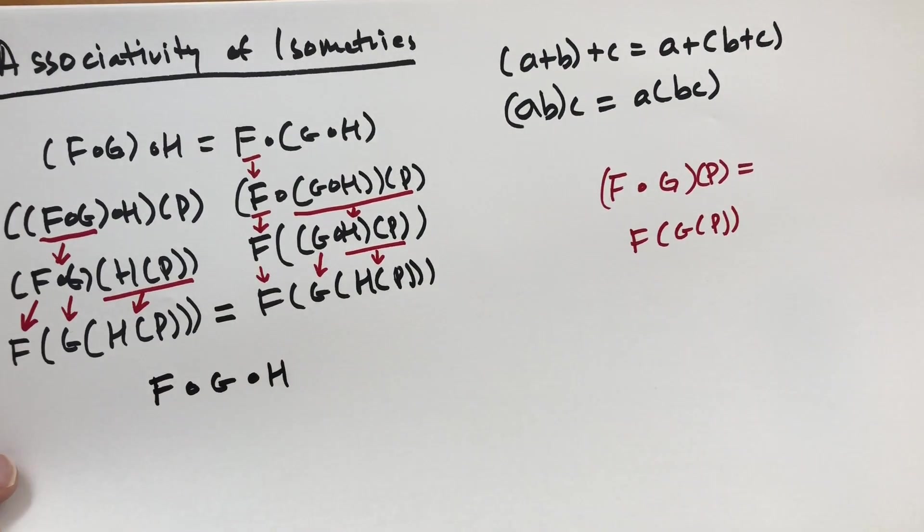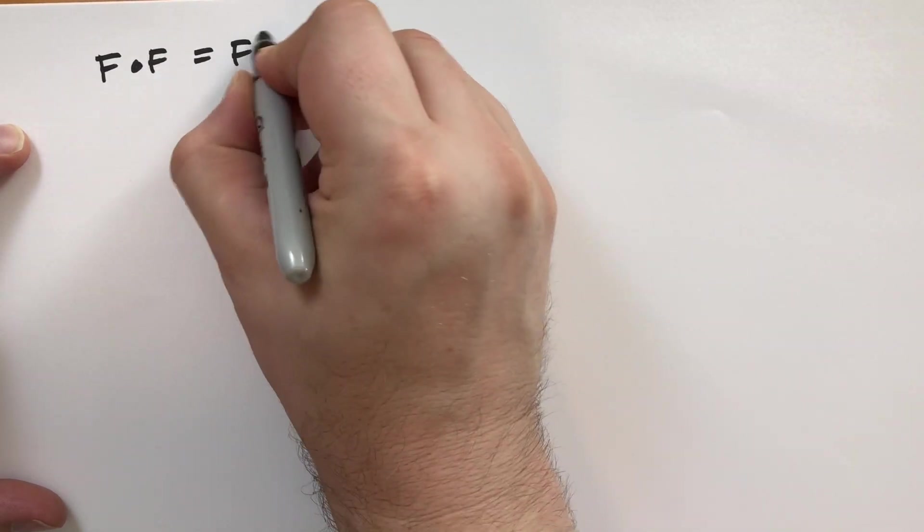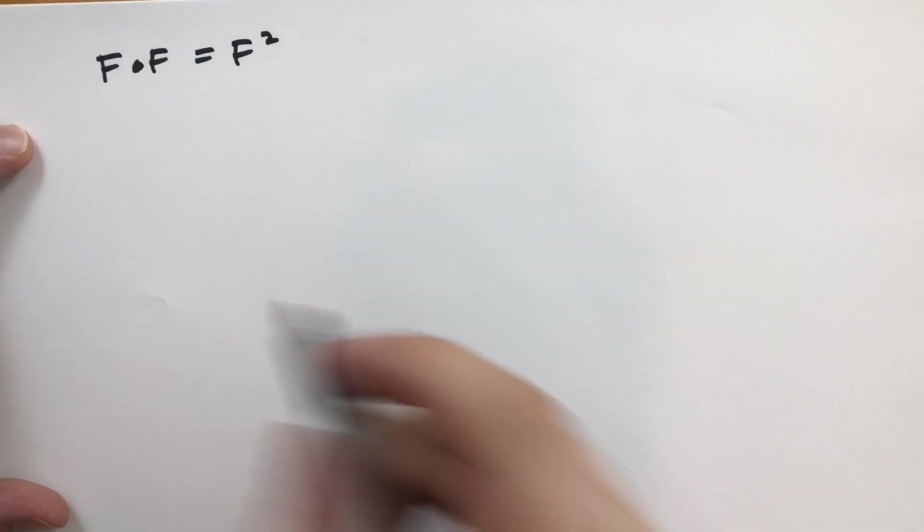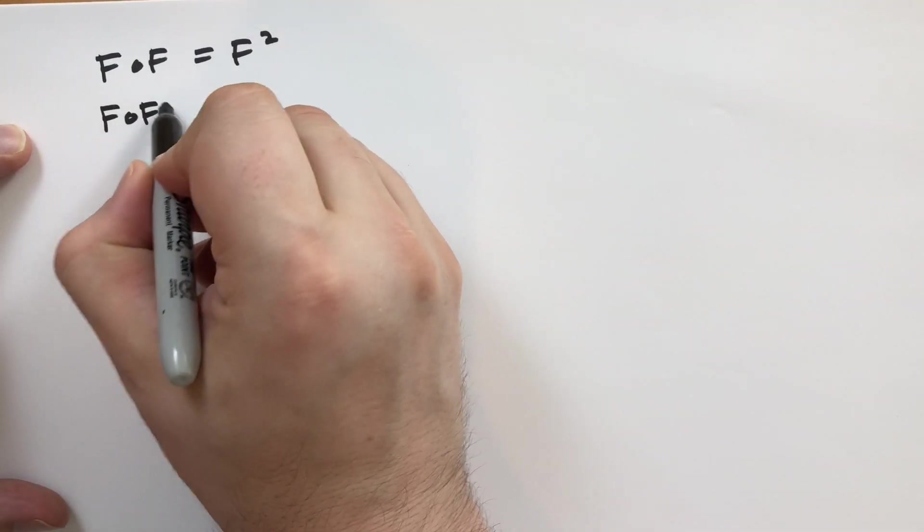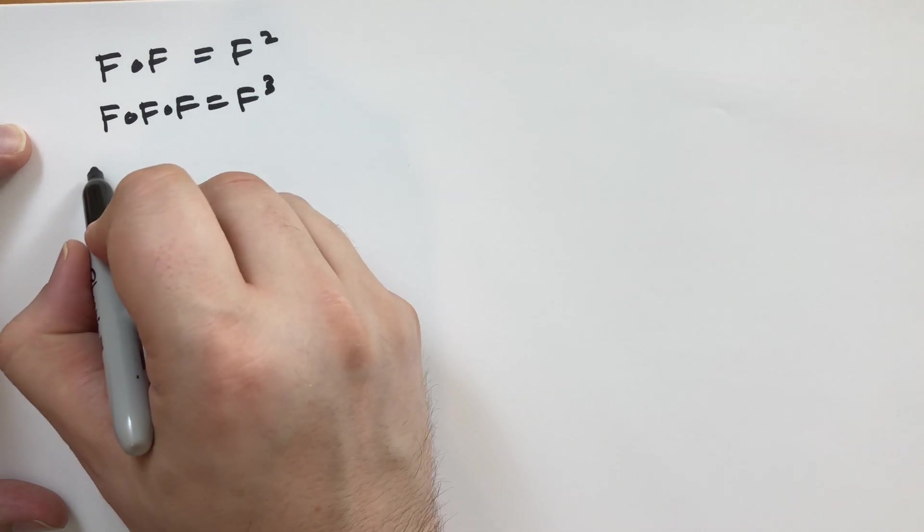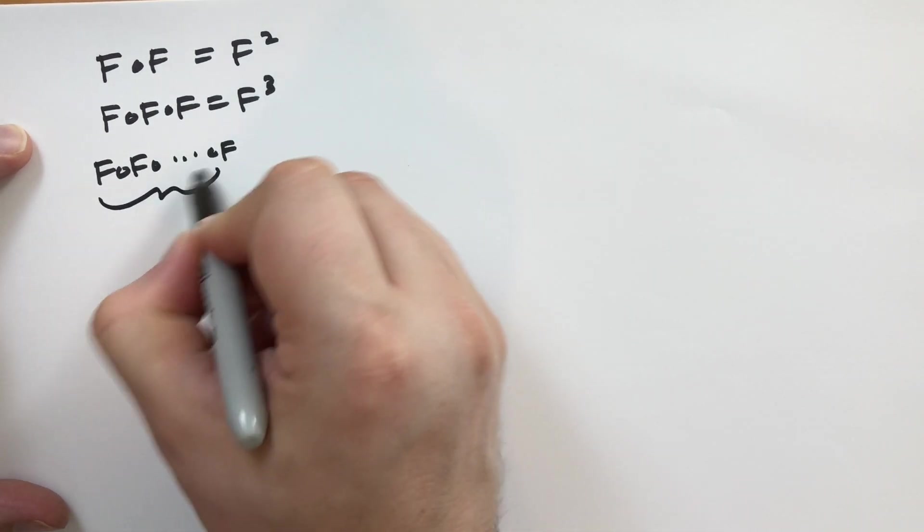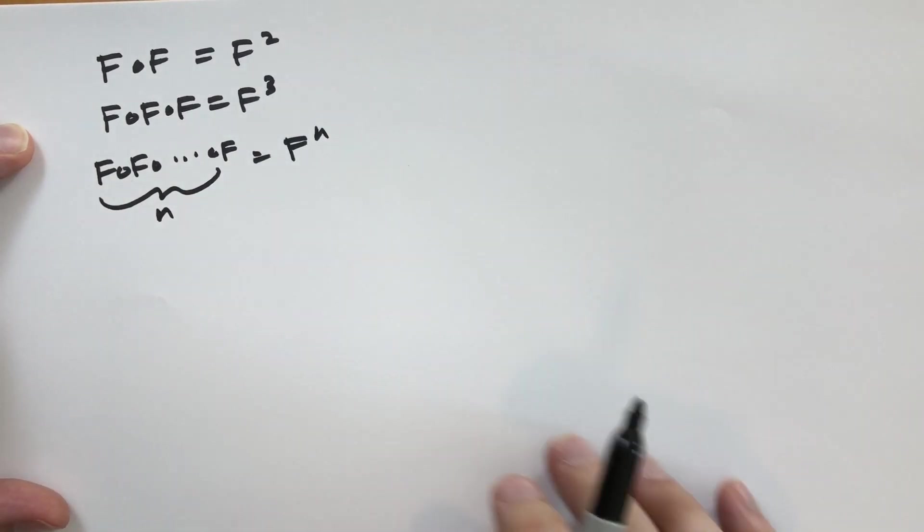What happens if you apply the same isometry multiple times? So if we have F of F, we call that F squared. This should harken back to what you learned already with algebra. And if we do it three times, that's F cubed. And in fact, we will say that if you have F applied to F N times, that's just F to the N. And this only works for positive integers. We'll get to negative integers in the next section, but for now, just focus on positive integers.